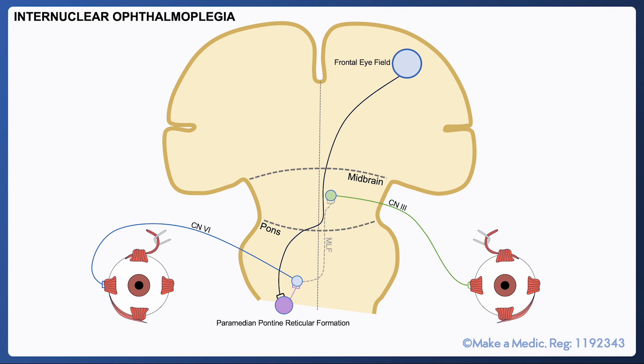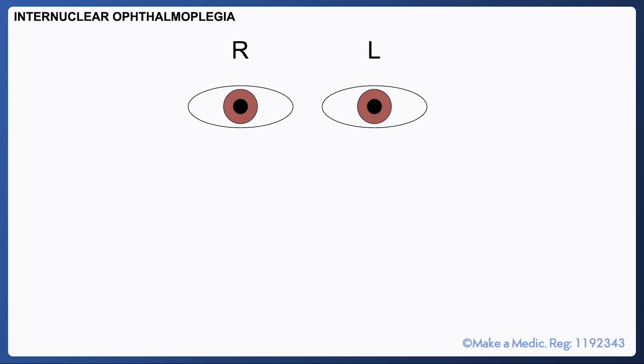Internuclear ophthalmoplegia is an important condition that comes up fairly often in exams and it's a disease that affects the medial longitudinal fasciculus and it often occurs in the context of demyelinating conditions like multiple sclerosis. The defect means that the oculomotor and abducens nerves are no longer working in unison.